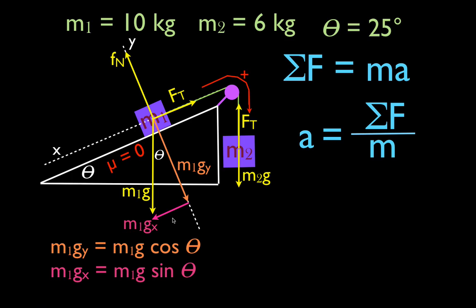Now we've drawn in all the forces, determined the positive direction, decomposed M1g, and figured out M1gy and M1gx. I like to move M1gx up along the incline so we can clearly see it is the x-component of M1g acting down the inclined plane — trying to pull M1 down the slope.